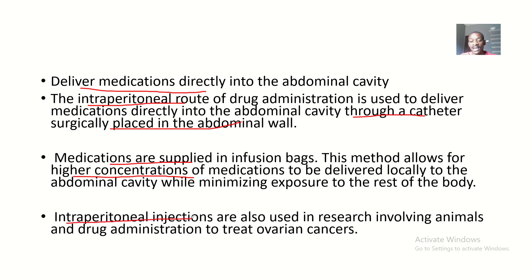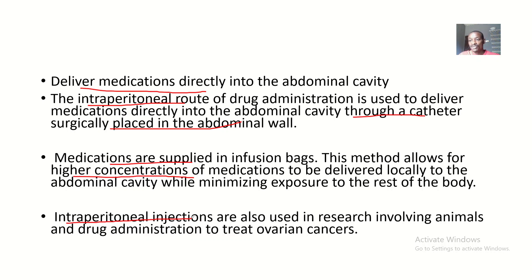Intraperitoneal injections are also used in research involving animals and in drug administration to treat ovarian cancers. The ovaries are in the abdominal cavity, so you can treat it directly rather than giving drugs through the oral route or the intravenous route, which would cause the whole body to react to the drug. So this intraperitoneal route is basically administering drugs directly to the abdominal cavity.